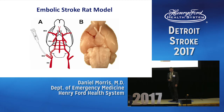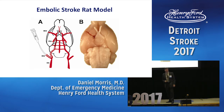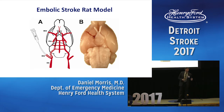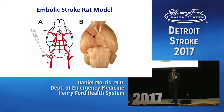The neuroscience laboratory here at Henry Ford Hospital, run by Dr. Michael Chopp, has an embolic stroke rat model. This involves cannulating the external carotid artery, threading a catheter up into the middle cerebral artery, and injecting a clot right into the middle cerebral artery to induce a stroke, which produces an infarct volume and also measurable neurological deficits that we can measure in the laboratory.